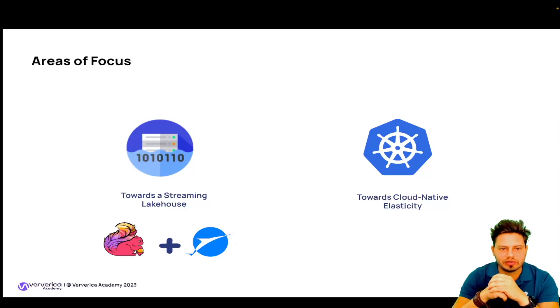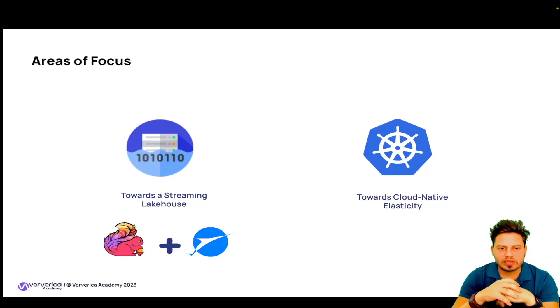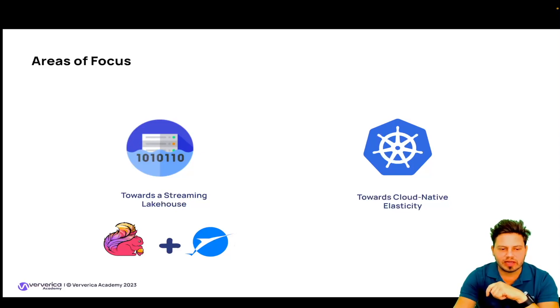The second focus area is about allowing Flink to run better in cloud native environments like Kubernetes. The Flink operator with the auto scaler and the adaptive scheduler play a big role here. Let's go and see the different FLIPs that came with Flink 1.18.